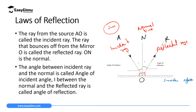Now another important thing: if regular reflection takes place, then the angle between the normal line and the incident ray is called the angle of incidence.